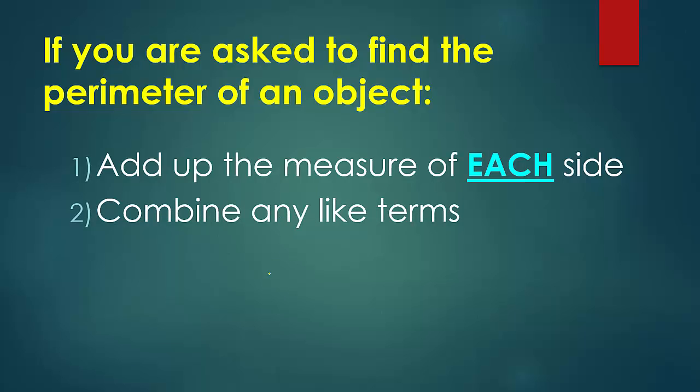And then you would combine any like terms. So, for example, when I say combine like terms, if I had like 2x plus 2y plus x, and let's just say minus y, we'll throw that in there, you would combine any like terms. So here you have two x's, right? So you've got an x here, an x here.